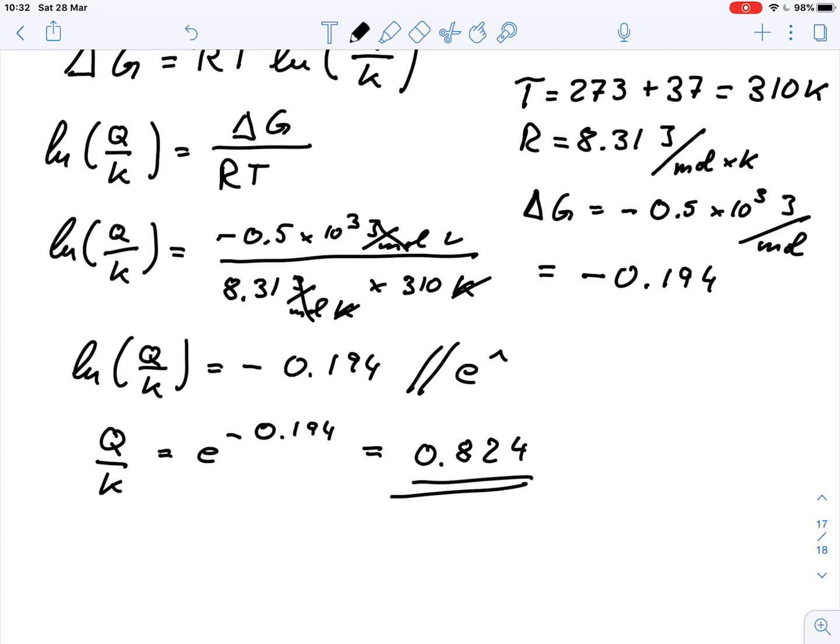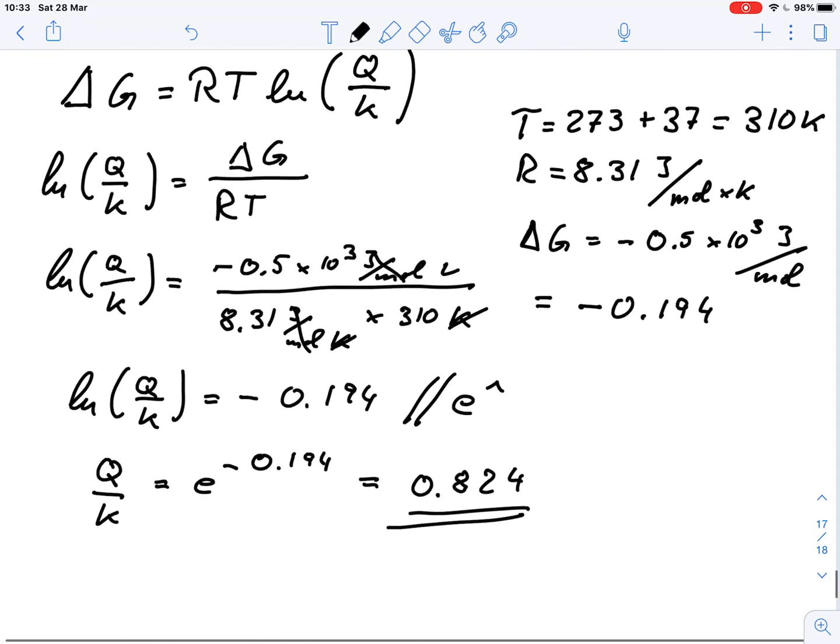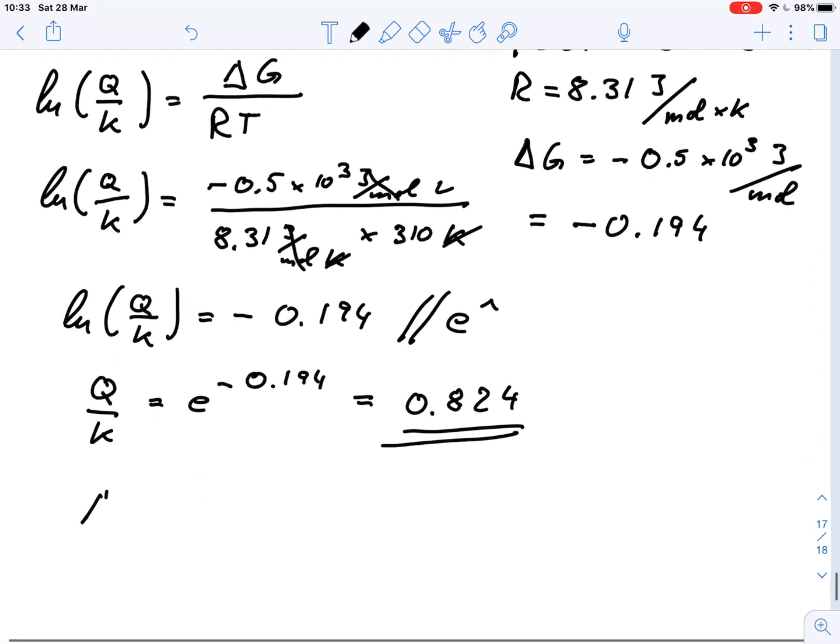So our Q value, the mass action ratio, is not too far away from the equilibrium. So we are pretty close to the equilibrium. But we also know that since our delta G is smaller than 0, we know that this reaction is feasible.